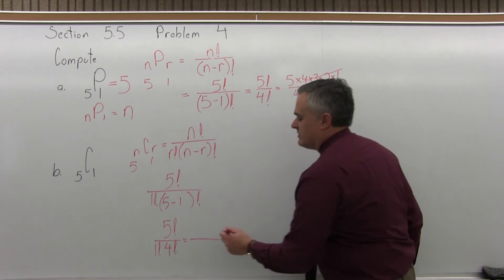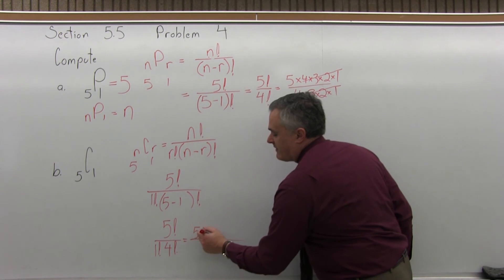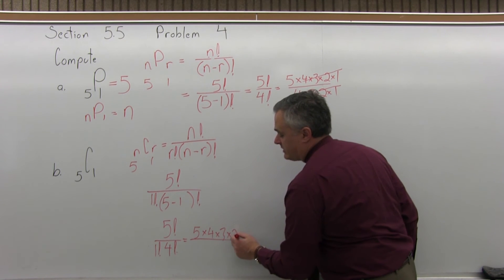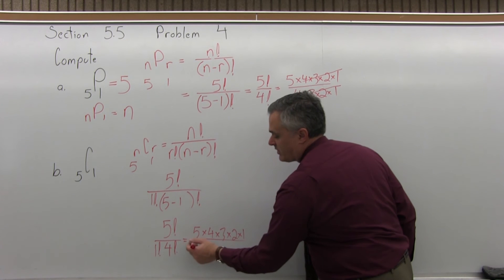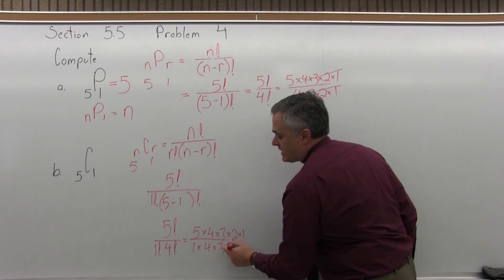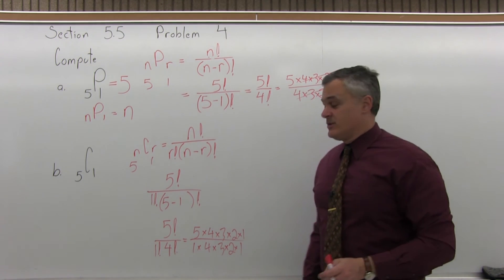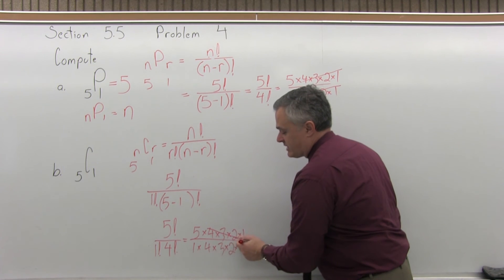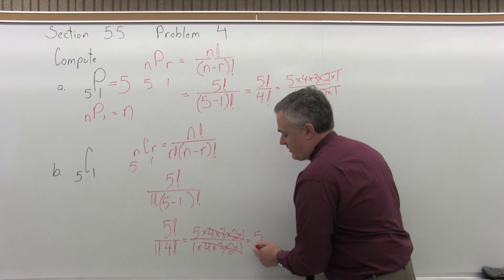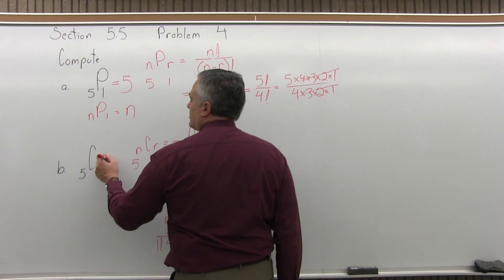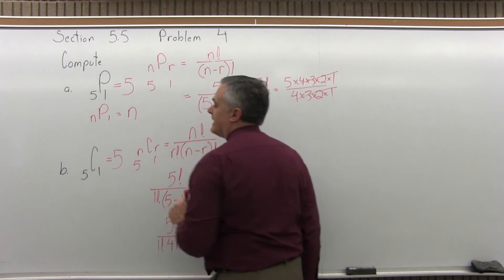So now, if you do that out, 5 factorial on the top is 5 times 4 times 3 times 2 times 1. And the denominator, 1 factorial is 1 times 4 factorial is 4 times 3 times 2 times 1. And you could multiply all that out and reduce it. But it's just so much easier to cancel 4 times 3 times 2 times 1 on the top and in the bottom. I'm left with 5 over 1, which is really 5. So 5 combination 1 is 5.